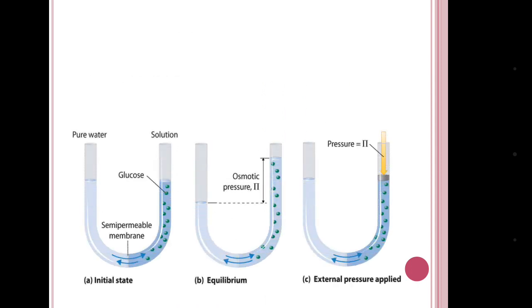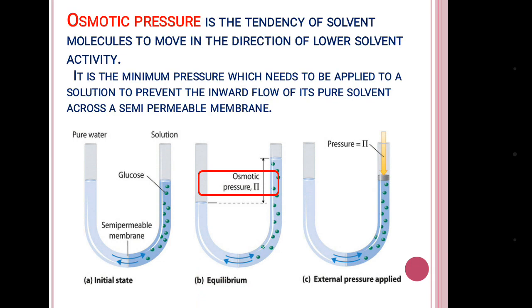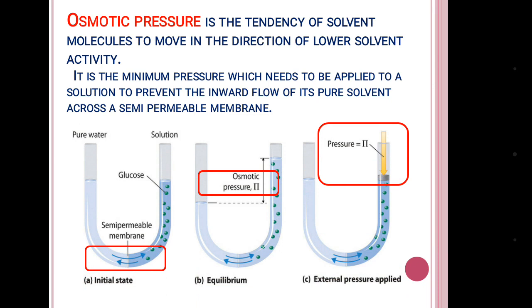Why does osmosis occur? The reason is osmotic pressure. It is the tendency of solvent molecules to move in the direction of lower solvent activity. We can also define it as the pressure that needs to be applied to a solution to prevent the inward flow of its pure solvent across a semi-permeable membrane.